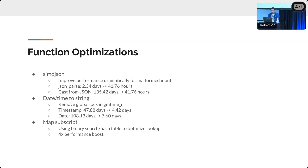We also have a map subscript optimization — I think it was already mentioned in the morning talk. We first replaced sequential search with binary search, then further optimized using a hash. That gives a four-times performance boost.